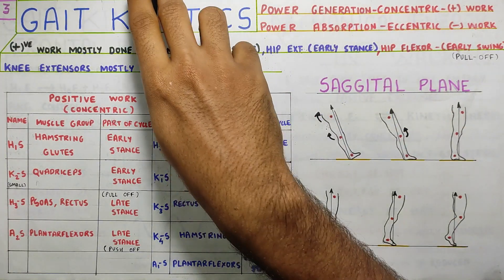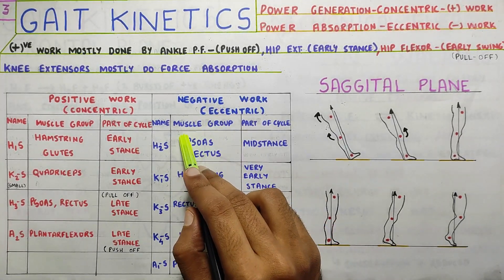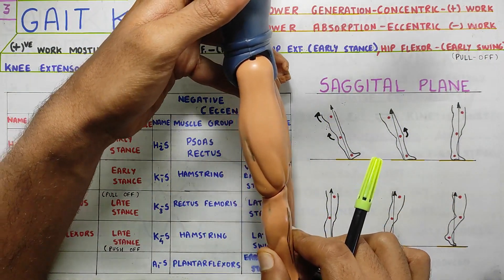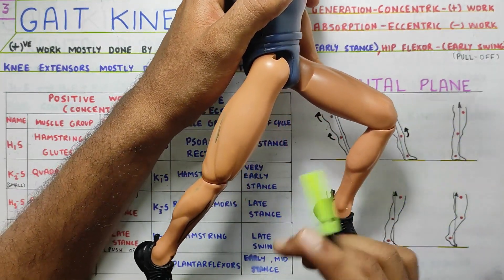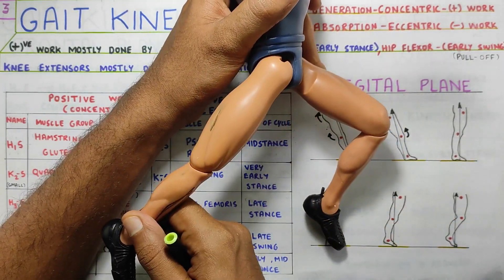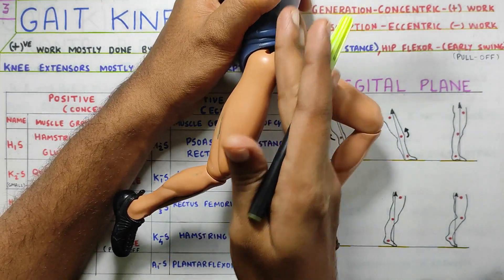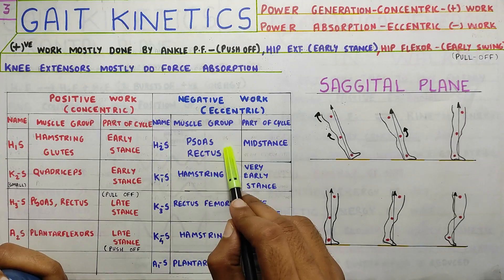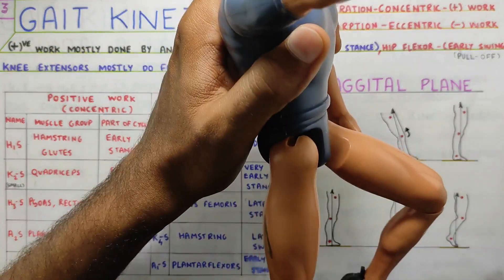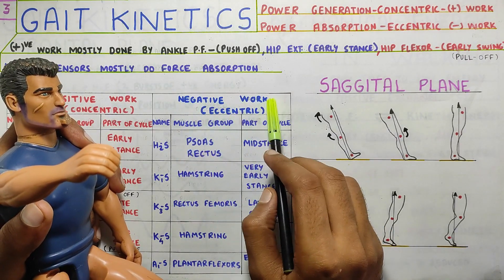Moving back up to the hip, H2S involves the psoas and rectus during mid stance. You are going from a hip flexion position to extension, and from extension to even more extension as you swing the other leg. The extension movement has to be controlled so it doesn't go too far. This will be controlled by the hip flexors and anterior muscles — psoas and rectus working eccentrically during mid stance. That is the negative or eccentric work at H2S.